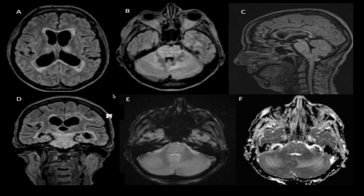Panel D, a coronal section, shows confluent hyperintensities in the brainstem, bilateral temporal, and left parietal regions, indicating widespread edema. In panels E and F — diffusion-weighted imaging and ADC — DWI shows involvement of the midbrain and bilateral cerebellar hemispheres, with corresponding hyperintensity in the ADC consistent with vasogenic edema. These represent atypical PRES findings.